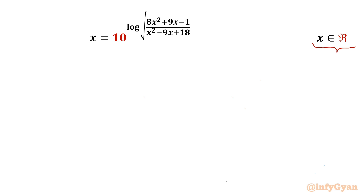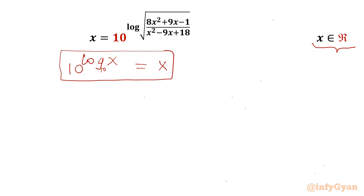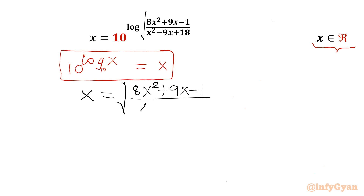Let's get started by writing one exponential property: 10 raised to the power log of x equals x, since the base of log is 10. Using this property on the right-hand side, the equation becomes x equals the square root of (8x² + 9x − 1) divided by (x² − 9x + 18).